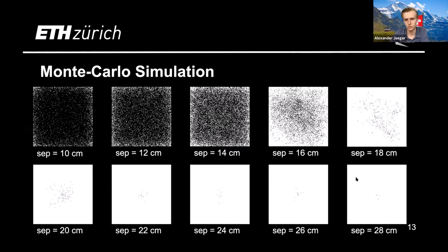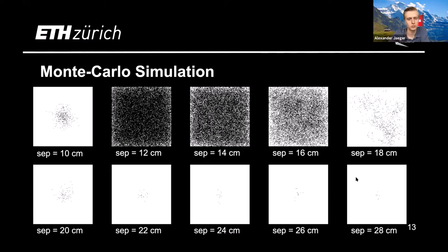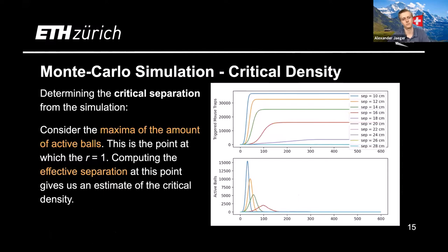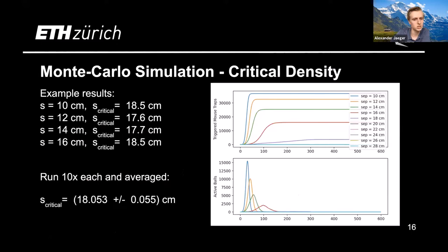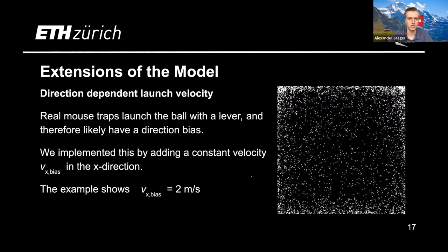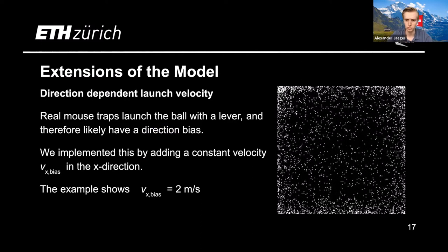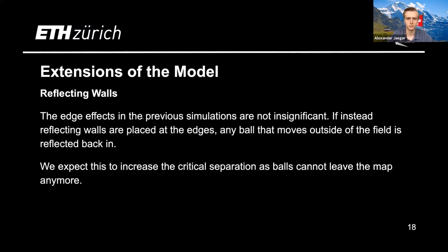To more efficiently determine critical density, we tracked the maximum number of active balls, which corresponds to the point where R equals one, and used this to compute an effective density and trigger probability. Using this method, we found the critical separation to be approximately 18 centimeters, whereas our earlier analytical estimate was 22 — confirming it was an overestimation. Possible extensions include direction-dependent launch velocity, though we saw some issues at higher velocities suggesting a possible code error, and reflecting walls as another option.